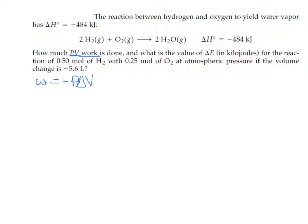They give us these numbers in the problem — it's fairly straightforward to plug them in. When they tell us we're at atmospheric pressure, we use one atmosphere. So I've got negative one atm, and the change in volume they're giving us is negative 5.6 liters. If you multiply those together you get a positive number: positive 5.6.